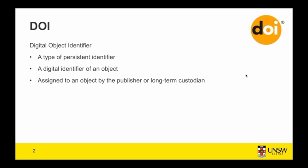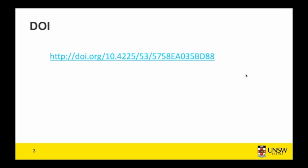A DOI, a digital object identifier, is a type of PID that is optimized for scholarly resources. Importantly, it's the identifier that is digital and the object can be digital or physical. DOIs are assigned to an object by the publisher or a long-term custodian, and the persistence of that identifier and the resource is managed by the organization and its policies.